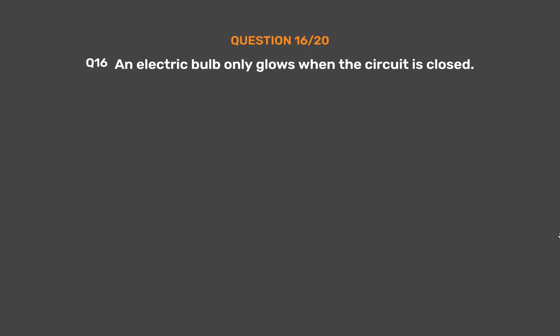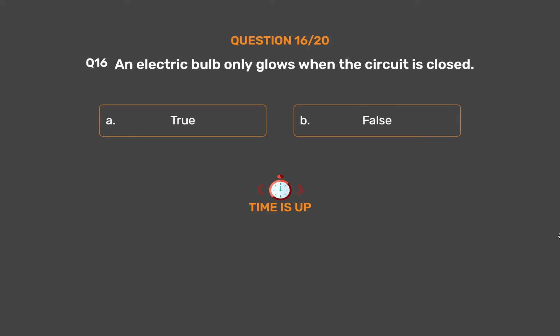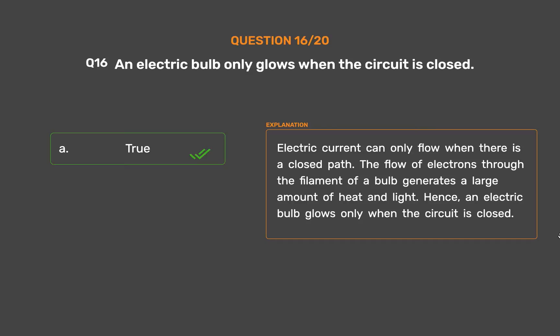Question number 16. An electric bulb only glows when the circuit is closed. Option A: True. Option B: False. The correct answer is Option A, True. Electric current can only flow when there is a closed path. The flow of electrons through the filament of a bulb generates a large amount of heat and light. Hence, an electric bulb glows only when the circuit is closed.